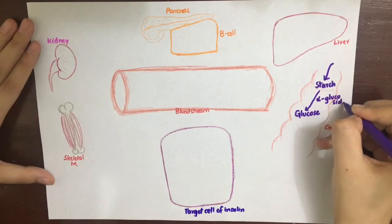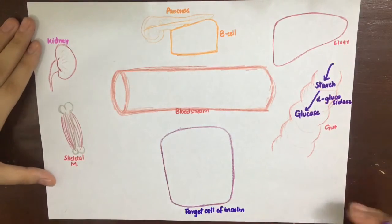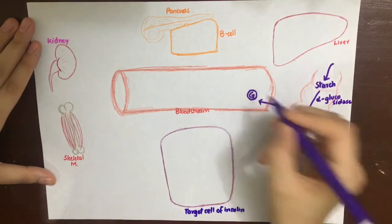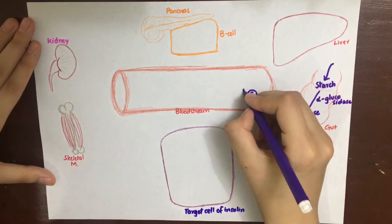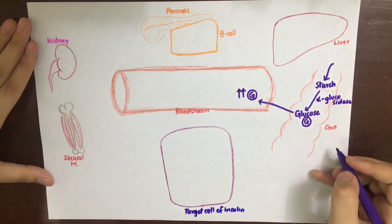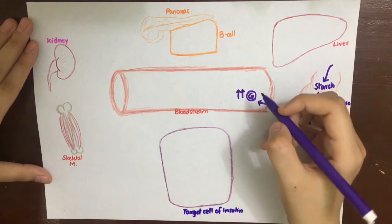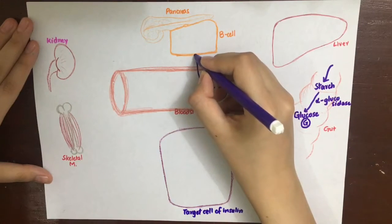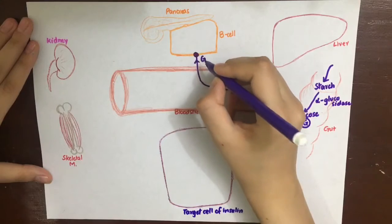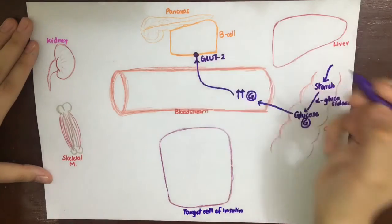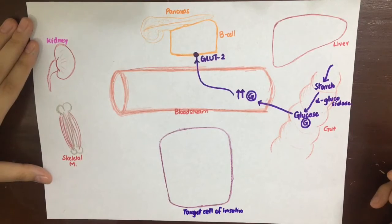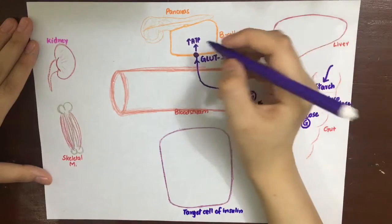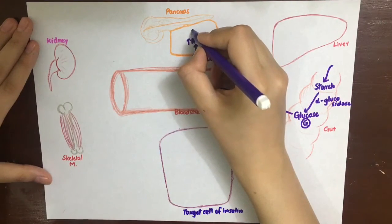When glucose is absorbed and reaches high concentration in the bloodstream, this high glucose will go to the beta cells of the pancreas and stimulate the GLUT2 receptors on the beta cells. GLUT2 has a high Km, meaning a low affinity for glucose, and will only attach to glucose when there is a very high level in the blood — that is, after meals. After the entry of glucose into the beta cell, there will be increased ATP production, and this increased ATP will then have a blocking effect on the potassium channels in the cell membrane.